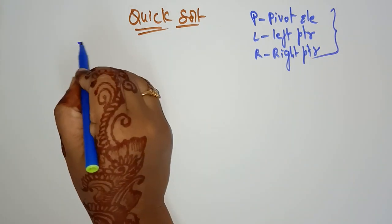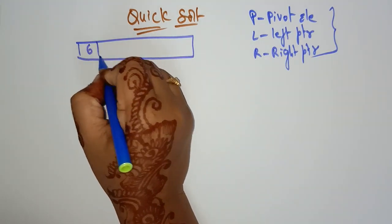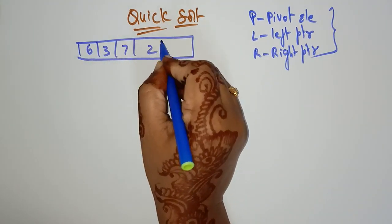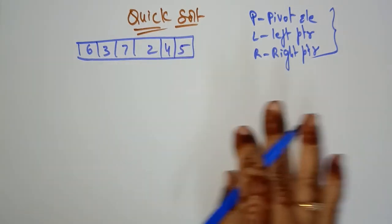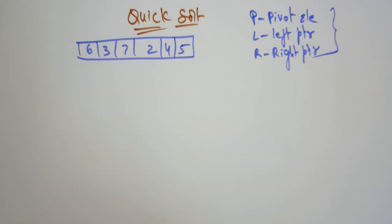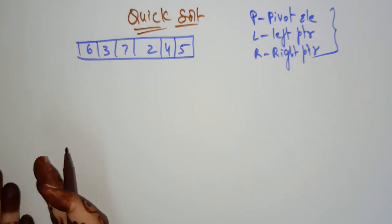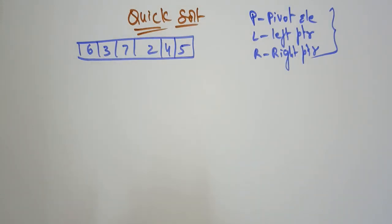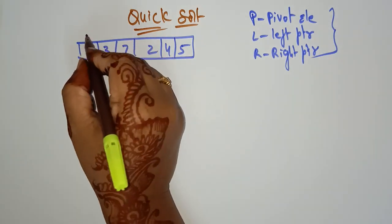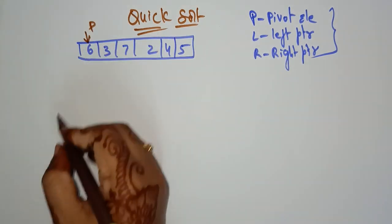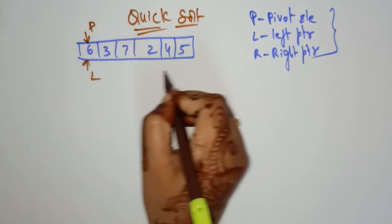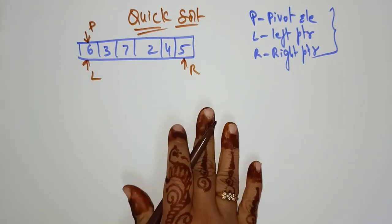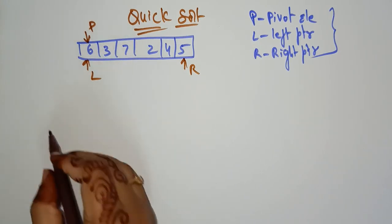Let's take an array consisting of 6, 3, 7, 2, 4, and 5. First let's find the pivot element. You can select any element in an array — either the starting element, the ending element, or the middle element. Here I am taking the first element as my pivot element, and you need to keep the left pointer and the right pointer at the right side.